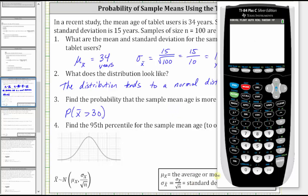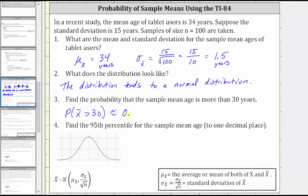Going to the calculator, we press the second bars for the distribution menu, option two for normal CDF. Because we have x̄ is greater than 30, the lower bound is 30. We need to exaggerate the upper bound. Let's use 99999. The mean is 34. Sigma for the sample distribution is 15 divided by square root 100, which is 1.5. To four decimal places, we have approximately 0.9962, which is equal to 99.62%.